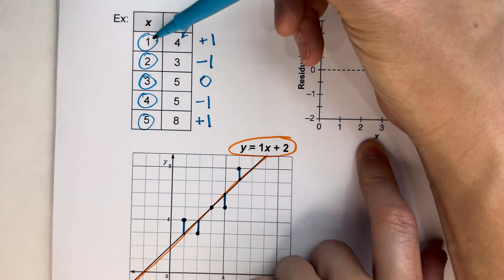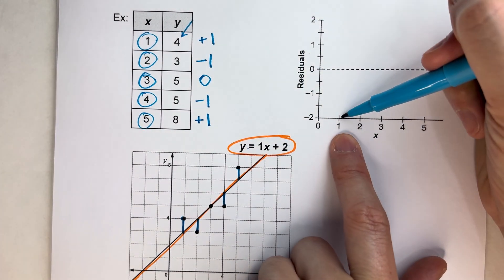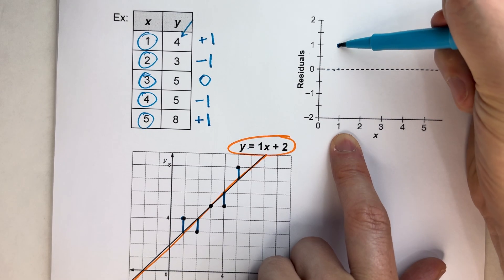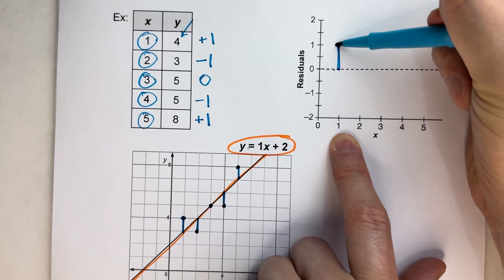So for example, for 1, we had a positive 1. So I find 1. Here's 0. So I'd get a positive 1. I'd plot it here. And I'd just draw a little line to show that's above.